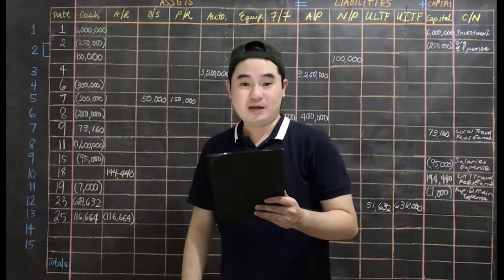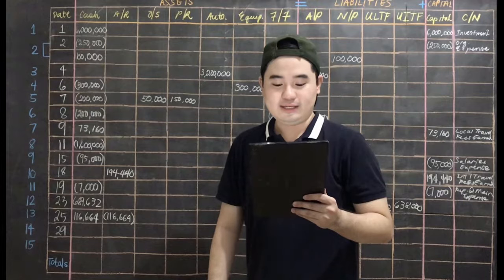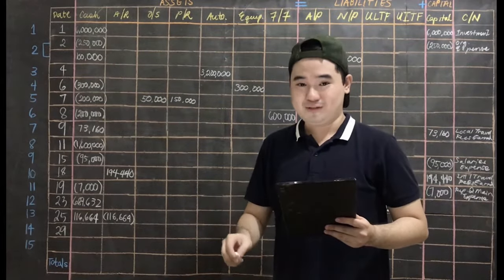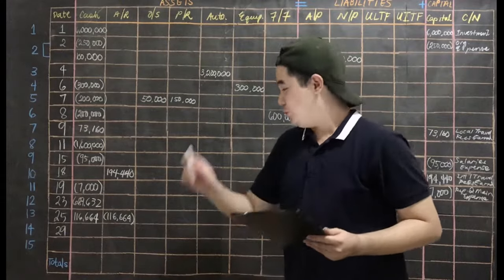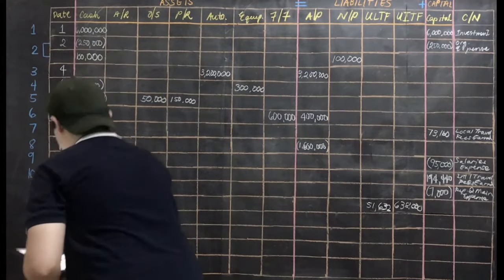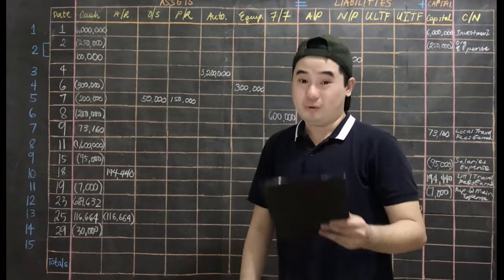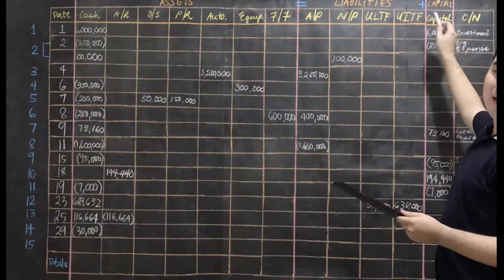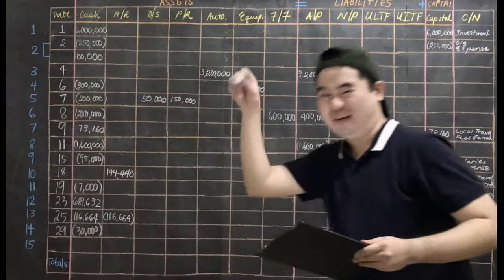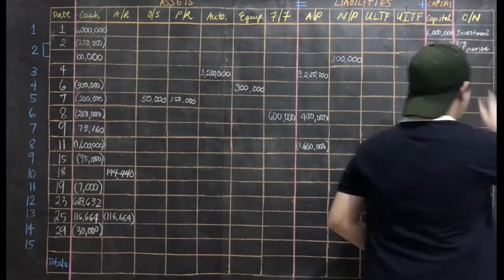Next is transaction number 14 which happened on April 29. The owner Ms. Yun Seri had an emergency and has withdrawn 30,000 cash for personal use. Your cash will decrease by 30,000. This is called withdrawals or drawing and that affects your capital account as well. Remember you invested this money and then you withdrew it as owner, so it has a negative effect. So we put here 30,000. What kind of transaction is this? Drawing.